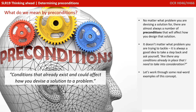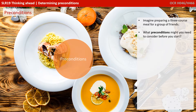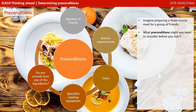Let's work through some real-world examples of this concept. Imagine you were preparing a three-course meal for a group of friends. What preconditions might you need to consider before you got started? Well, how many friends are you inviting over? That's going to depend on how many ingredients you need to buy.